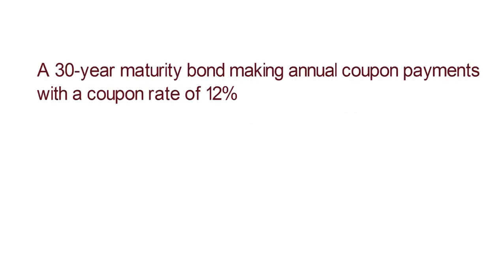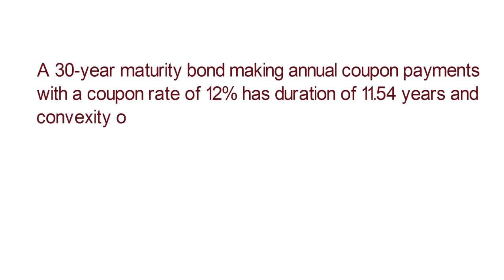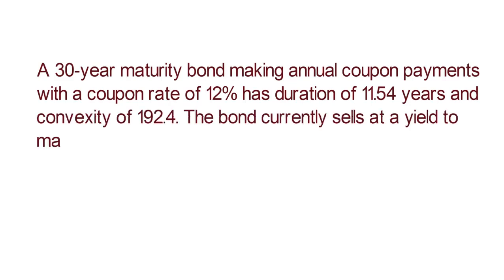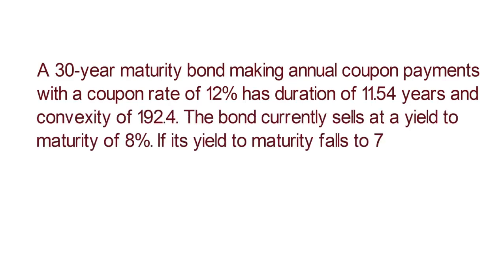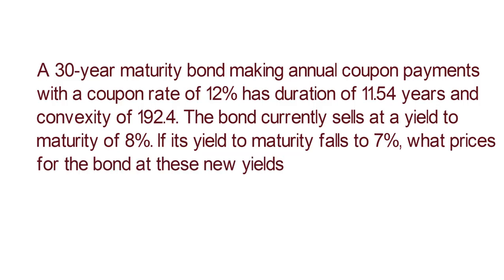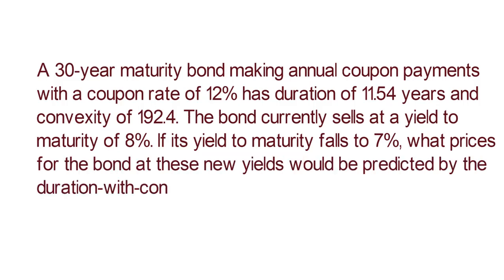Let's take an example. A 30-year maturity bond making annual coupon payments with a coupon rate of 12% has a duration of 11.54 years and convexity of 192.4. The bond currently sells at a yield to maturity of 8%. If its yield to maturity falls to 7%, what prices of the bond at these new yields would be predicted by the duration with convexity rule?